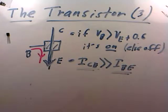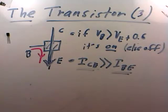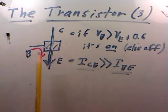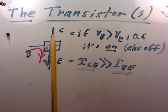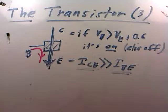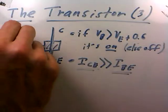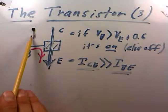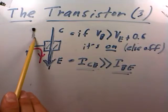Let's continue our discussion on transistors. We have the transistor defined as a device that looks like a black box with three leads: collector, emitter, and base. It's a three-lead device. You can see the little black area with the three leads coming out.